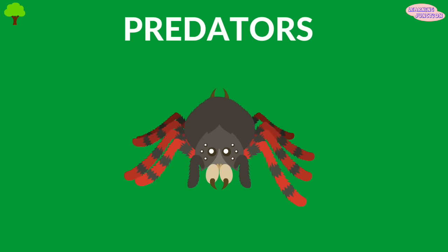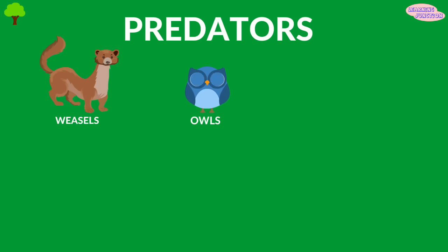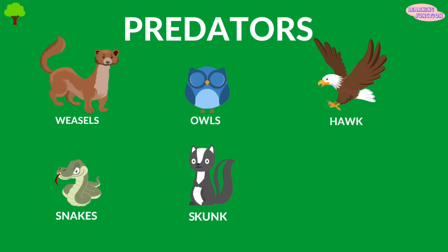Some predators of tarantulas are weasels, owls, hawks, snakes, and skunks. Their biggest enemy is the spider wasp.